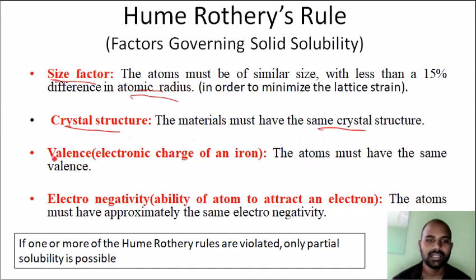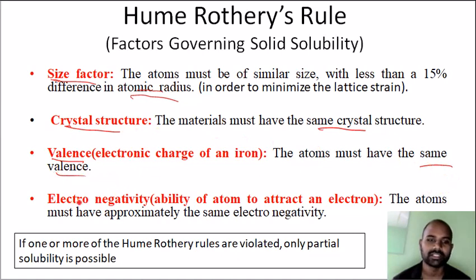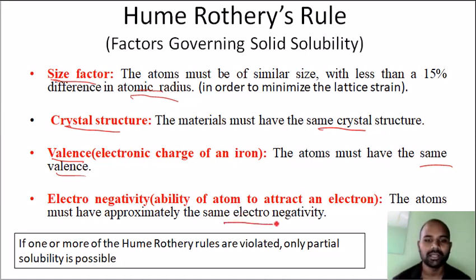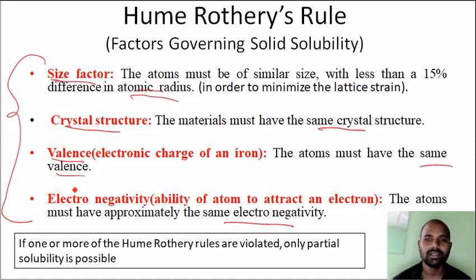Next is valency: the number of electrons in the outermost orbit must be almost the same — the same or closer. Next is electronegativity: electronegativity is the ability of an atom to attract an electron. This must also be similar and close. If all four rules are satisfied, we have complete solubility. If one or more rules are violated, then there is only partial solubility. If all rules are accepted, we can have complete solubility.